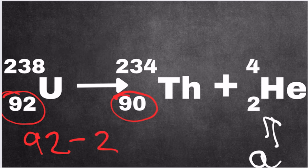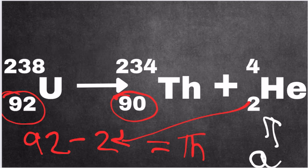2 is basically the atomic number of helium, and that becomes the atomic number of thorium. Any element with 90 protons is thorium.